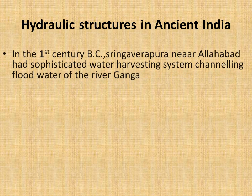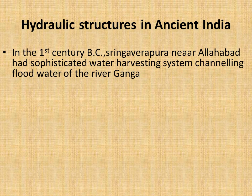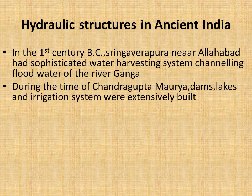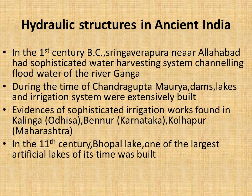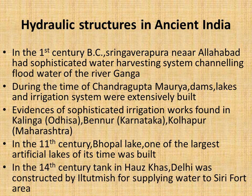In the first century BC, Sringaverapura near Allahabad had a sophisticated water harvesting system channeling the flood water of the river Ganga. During the time of Chandragupta Maurya, dams, lakes, and irrigation systems were extensively built. Evidence of sophisticated irrigation works has also been found in Kalinga (Odisha), Nagarjunakonda (Andhra Pradesh), Bennur (Karnataka), and Kolhapur (Maharashtra). In the 11th century, Bhopal Lake, one of the largest artificial lakes of its time, was built. In the 14th century, the tank in Hauz Khas, Delhi, was constructed by Iltutmish for supplying water to the Siri Fort area.